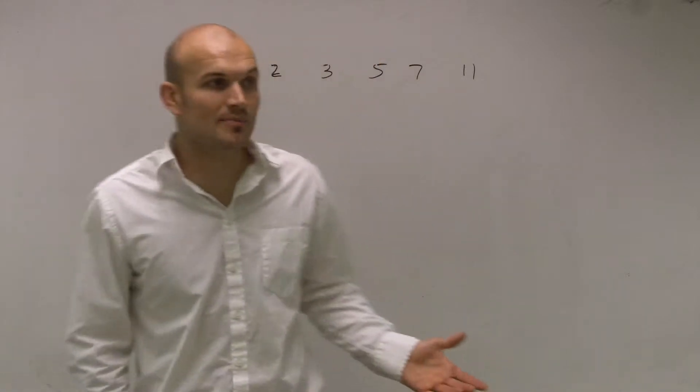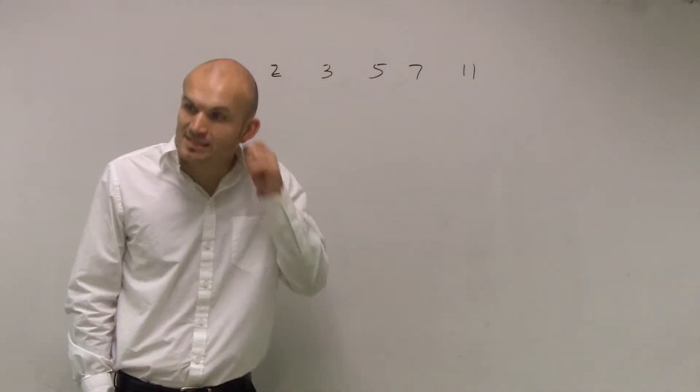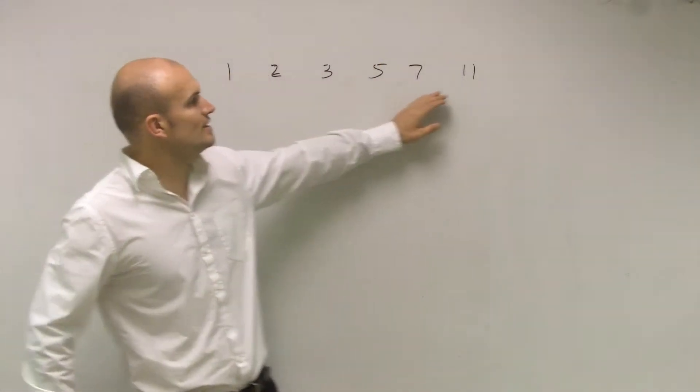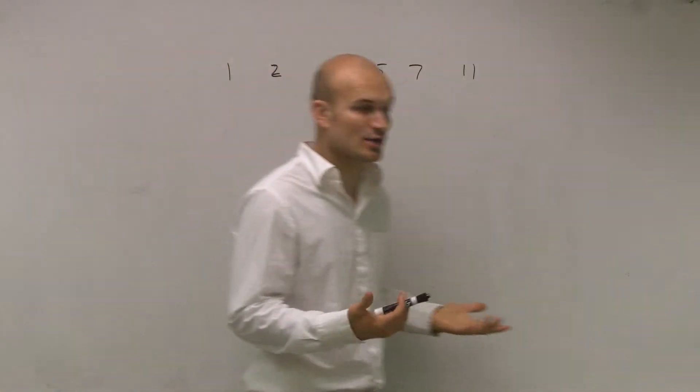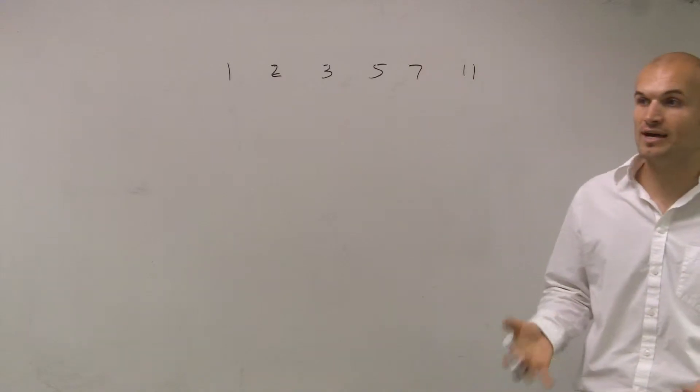And if you remember, when dealing with prime numbers, what a prime number means is it can only be divided by itself and one. There's no other number that goes into it besides itself and the number one.